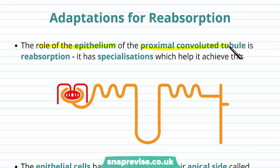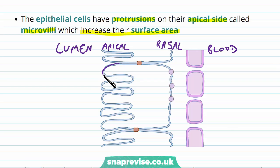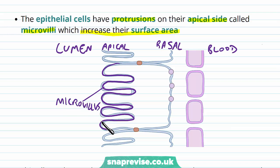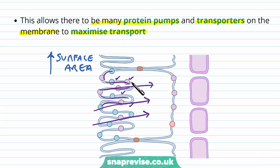The epithelium of the proximal convoluted tubule is adapted for reabsorption in several ways. First, the cells have protrusions on their apical side facing the tubular lumen called microvilli — a microvillus is a projection found on a single cell, and collectively they are called microvilli. These increase the surface area, providing more membrane space for protein pumps and transporters, maximizing transport and the reabsorption of ions and solutes at a faster and more efficient rate. Without microvilli, a flat membrane would have much less space for these protein pumps.